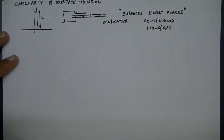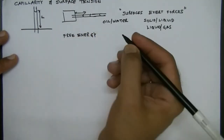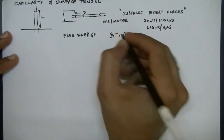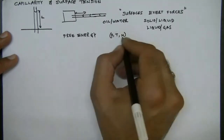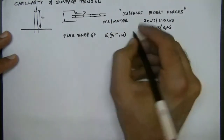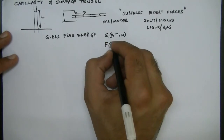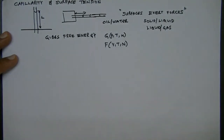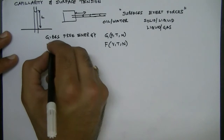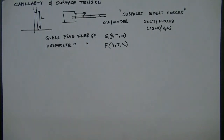One way to understand surface tension is by studying the free energy. If pressure, temperature, and the number of molecules are kept constant, then we work with the Gibbs free energy. Alternatively, if volume, temperature, and the number of molecules are our state quantities, then we work with the Helmholtz free energy. In any case, the free energy is related to surface tension.